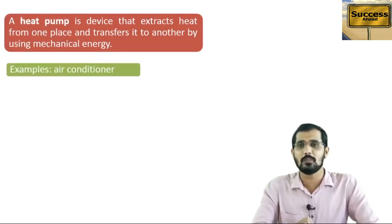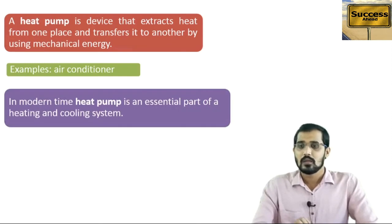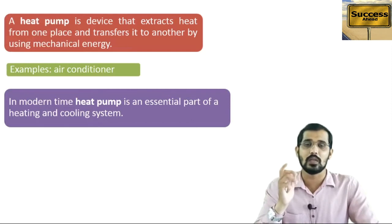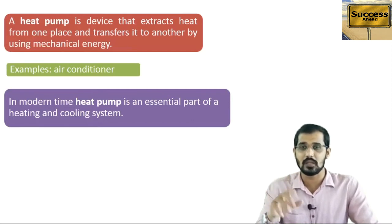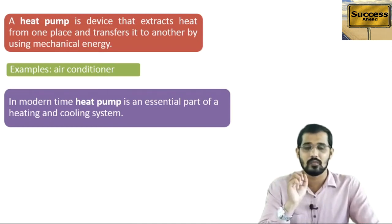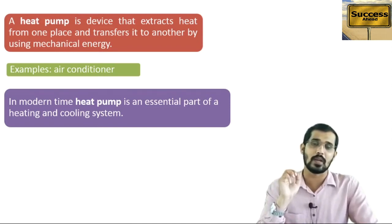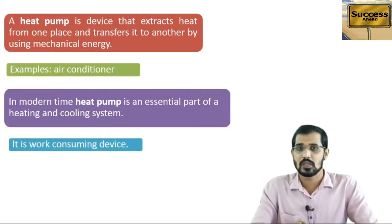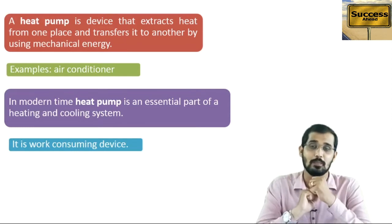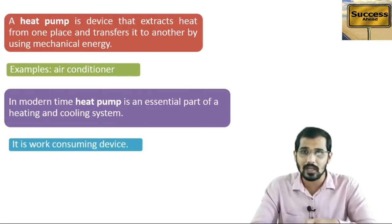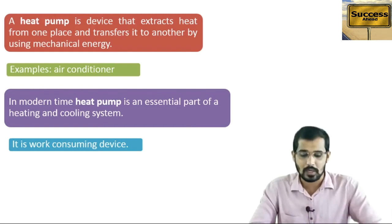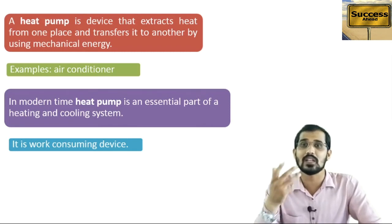The best example of a heat pump is an air conditioner. In modern times, the heat pump is an essential part of heating and cooling systems. The heat pump is a work-consuming device because we are extracting heat from the lower temperature and transferring it to the higher temperature. On the other hand, the heat engine is a work-producing device.